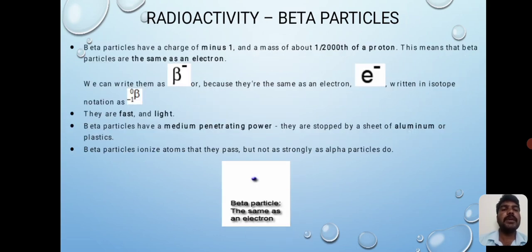Beta particles have a charge of minus one and a mass of about one two-thousandth of a proton. This means beta particles are the same as an electron. We can write them as β⁻, or in isotope notation as ⁻¹β⁰. They are fast and light. Beta particles have a medium penetrating power. They are stopped by a sheet of aluminum or plastic. Beta particles ionize atoms that they pass, but not as strongly as alpha particles do.